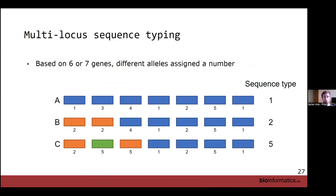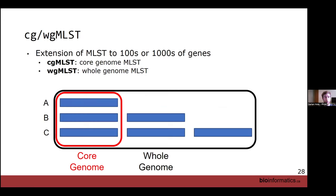Multi-locus sequence typing (MLST) investigates seven loci or a small number of loci; each gets assigned an identifier based on their allele, and the combination of identifiers gets a unique sequence type. This expands into core genome MLST and whole genome MLST schemes. Core genome is present in all or almost all genomes — a housekeeping gene is a good example. Whole genome MLST is the core genome plus accessory proteins, giving a more detailed classification system to subtype your organism.